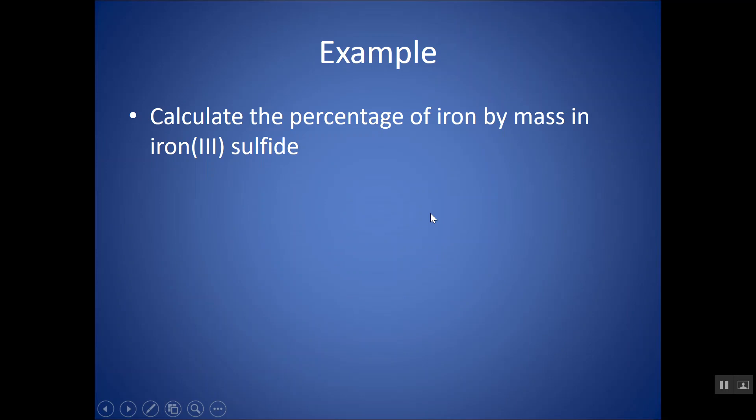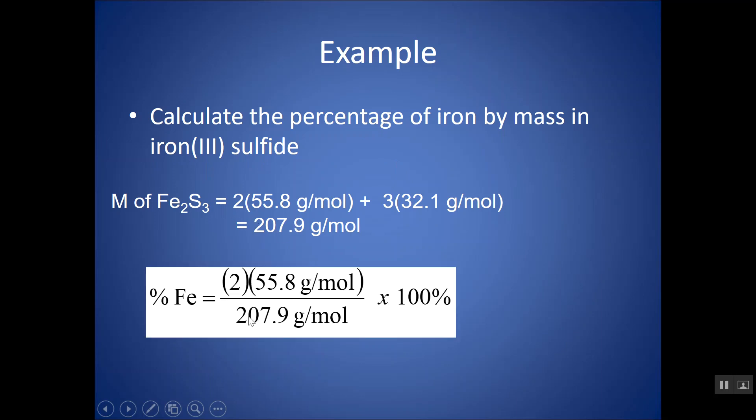Take a moment, try this example. So, I've asked for the percent of iron by mass in this particular compound. Get your molar mass of the compound. That would go in your denominator. The mass of the part, there's two iron. So, 2 times 55.8 would go on top, and I get 53.7.